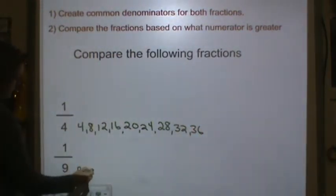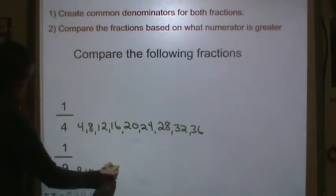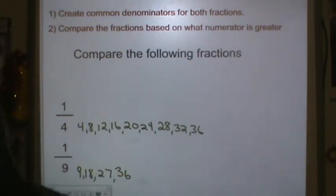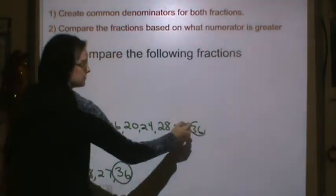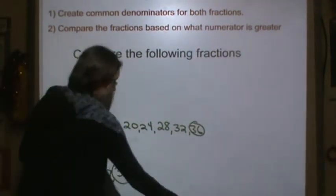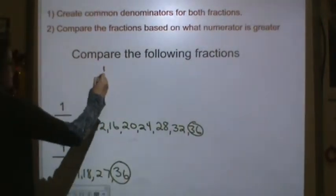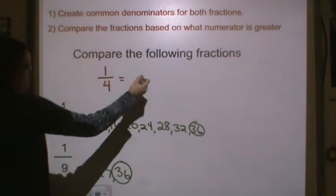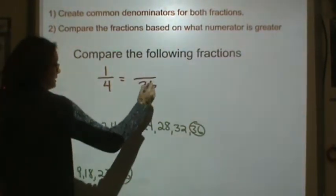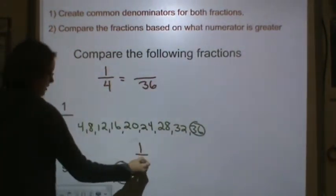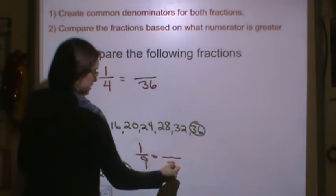Let's do 9, 18, 27, 36. There, I see my common denominator, my common multiple. We make that multiple your new denominator. So 1/4 is equal to something over 36, and 1/9 is equal to something over 36.